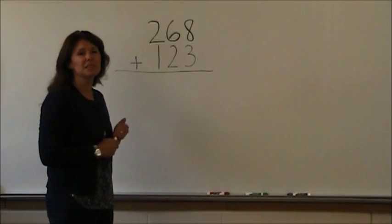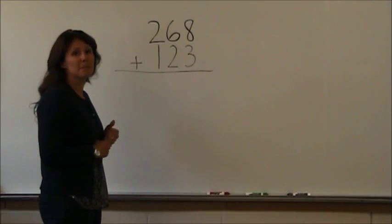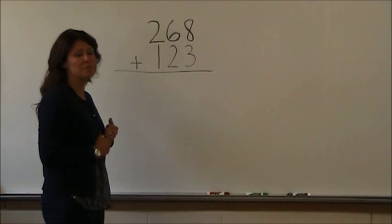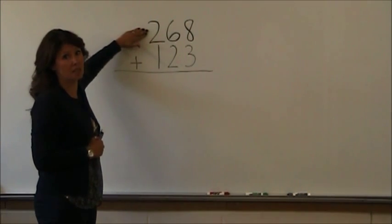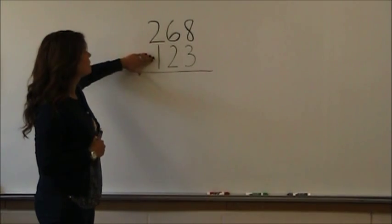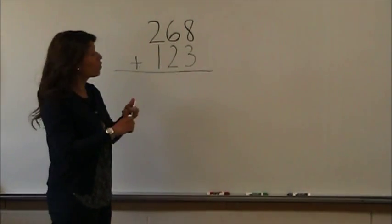Now that we understand place value, we're going to demonstrate the partial sums addition method with three-digit numbers. We start in the hundreds column. Two hundred plus one hundred. I'm going to put my thoughts over here.